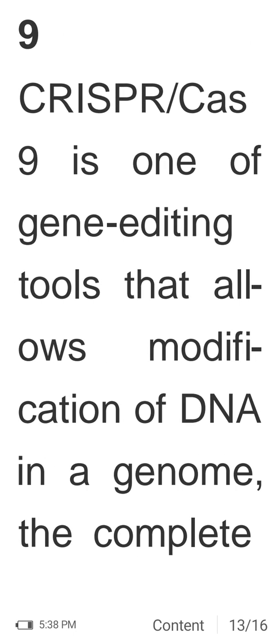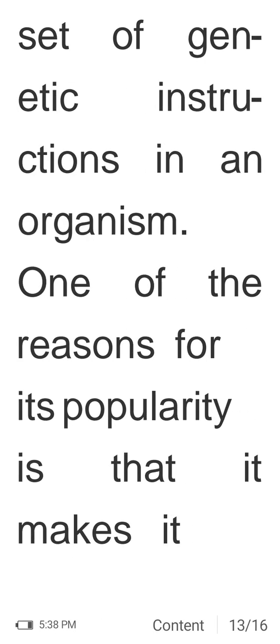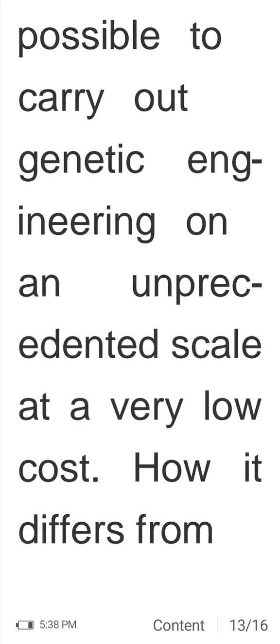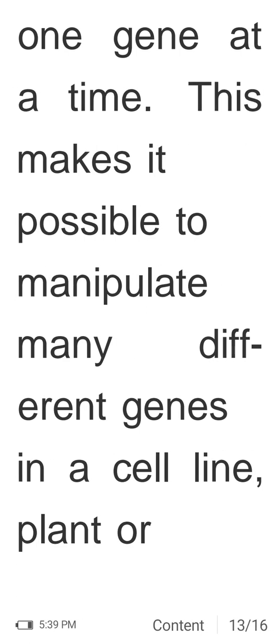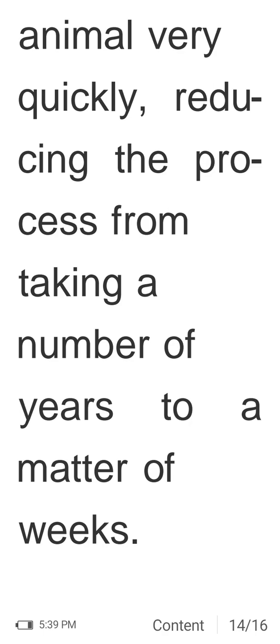CRISPR-Cas9 is one of the gene editing tools that allows modification of DNA in a genome — the complete set of genetic instructions in an organism. One of the reasons for its popularity is that it makes it possible to carry out genetic engineering on an unprecedented scale at very low cost. It differs from previous genetic engineering techniques in that it allows for the introduction or removal of more than one gene at a time, enabling manipulation of many different genes in a cell line, plant, or animal — reducing the process from years to a matter of weeks.